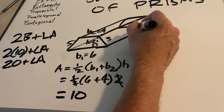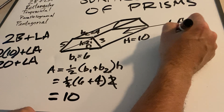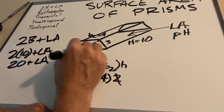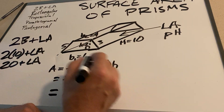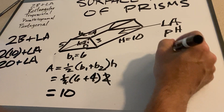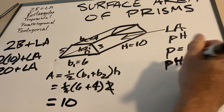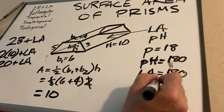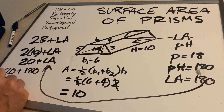Now we have to find out what the lateral area is. To find that out, we need to multiply the perimeter times the height. We know the height is 10. What would the perimeter of the base be? We just add all of the sides of the trapezoid: 6 plus 4 is 10, 5 plus 3 is 8, 10 plus 8 is 18. So the perimeter equals 18. The height is 10, so perimeter times height is 18 times 10, or 180. This is our lateral area.